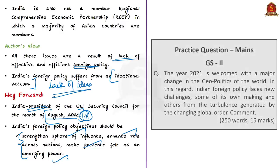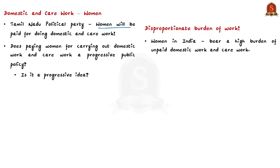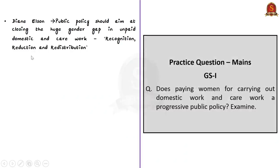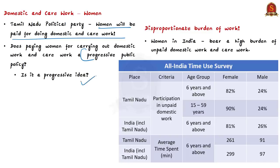This is all about this article. Now, let us have a look at the next article, 'A Step Back in Gender Equality.' This article is with reference to a poll promise made recently by movie actor turned politician Kamal Haasan. He promised that women will be paid for doing domestic and care work. The question is: is the electoral promise of paying women for carrying out domestic and care work a progressive public policy? Articles like this will help you better answer essay questions — recently there was a question on patriarchy — and it will also help you in GS1 questions.